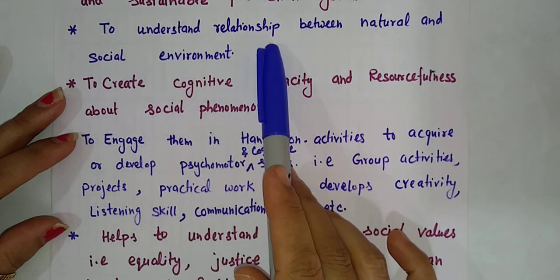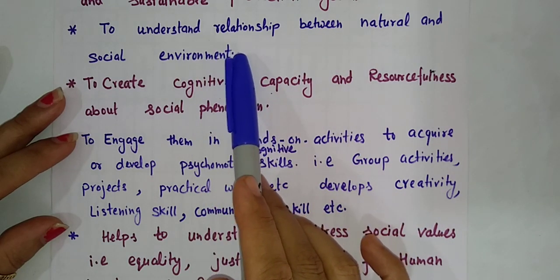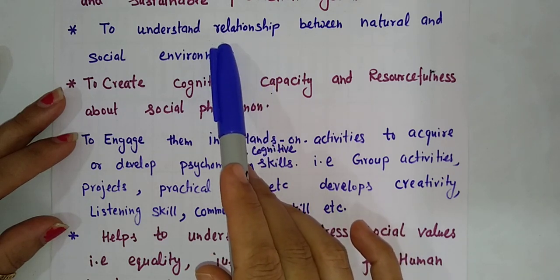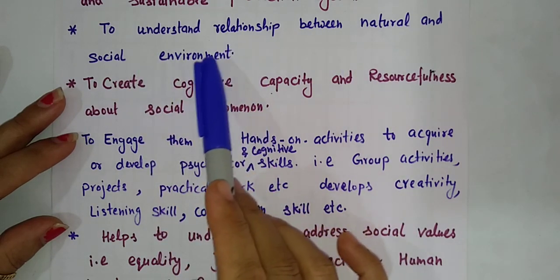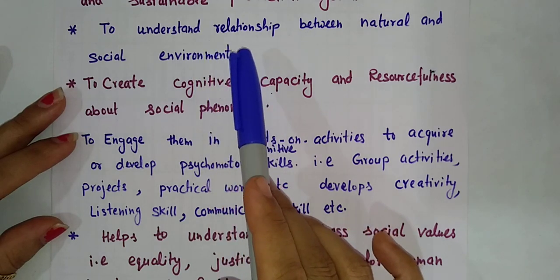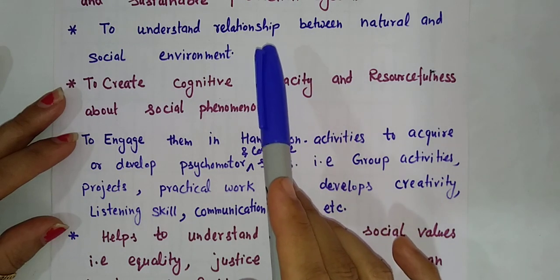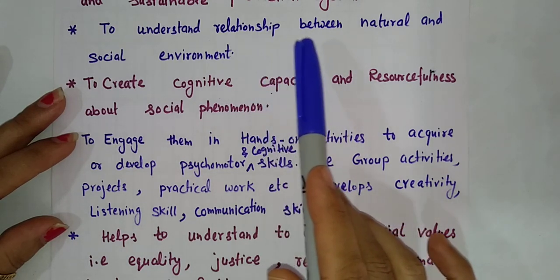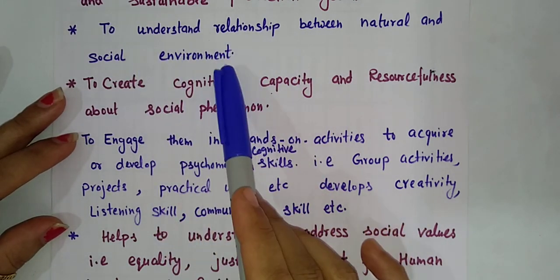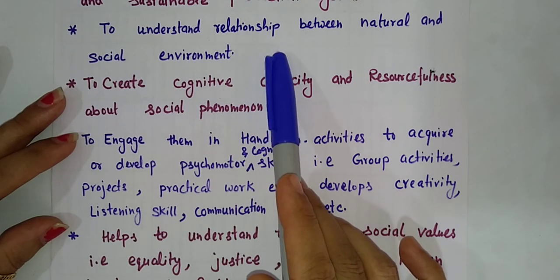The cow and the buffalo are in the natural and physical environment, but they are related to the social environment as well. The sun is a natural source in the natural environment. We use solar panels through which we produce light — that production is related to the social environment. So we relate the natural and social environment, and that is also an important aspect of EVS.